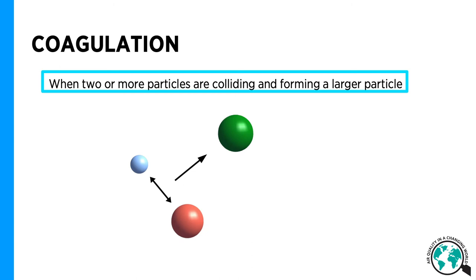Particles collide and stick due to Brownian diffuse motion, also called random motion. This process reduces the number of particle concentration, but enhances the particle volume. In the atmosphere, the main role of coagulation is to deplete the smallest particles by coagulation into larger particles. We are here talking about particles with a diameter of less than 10 nanometers. Particles above one micron only experience negligible growth due to condensation and coagulation.